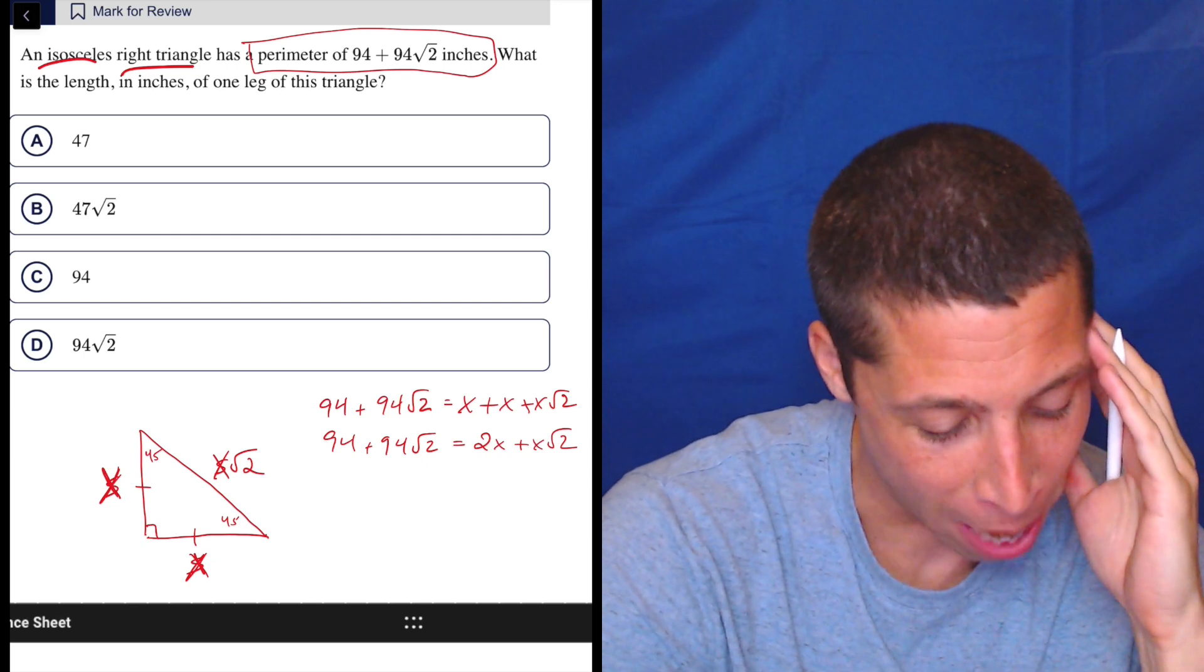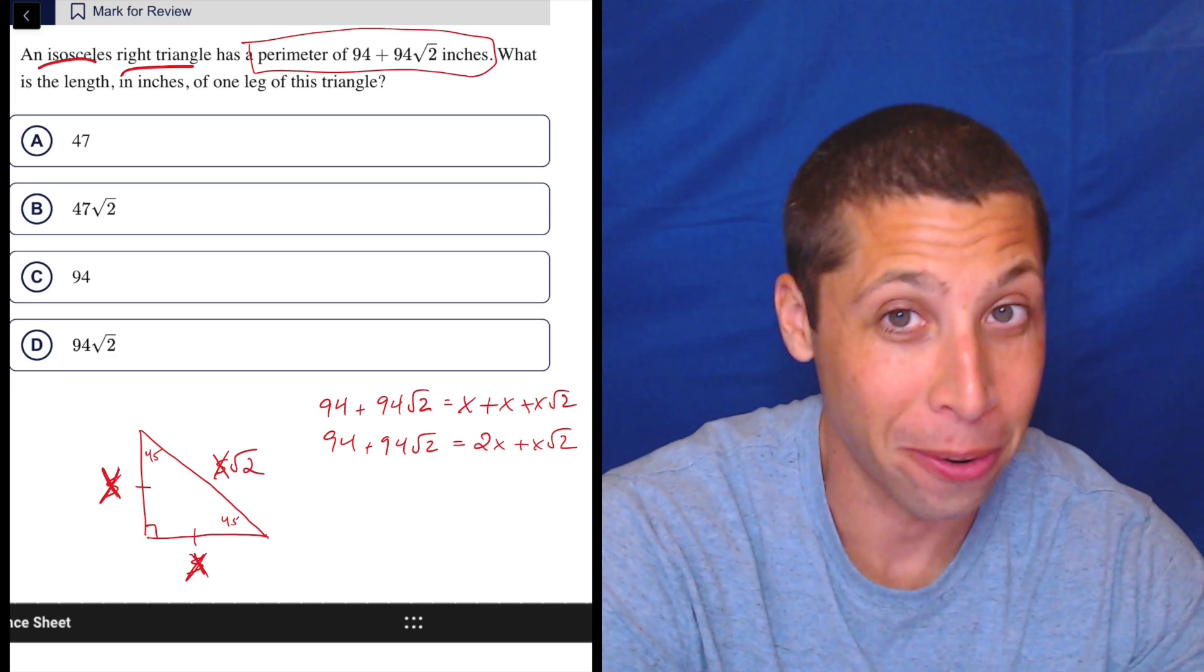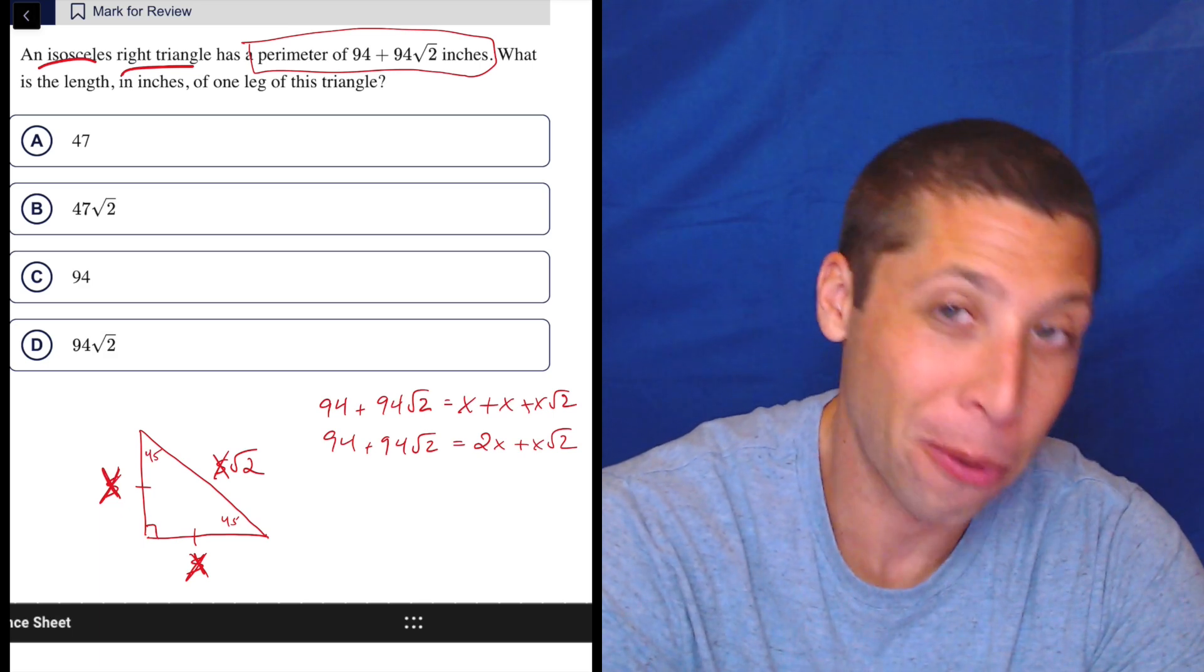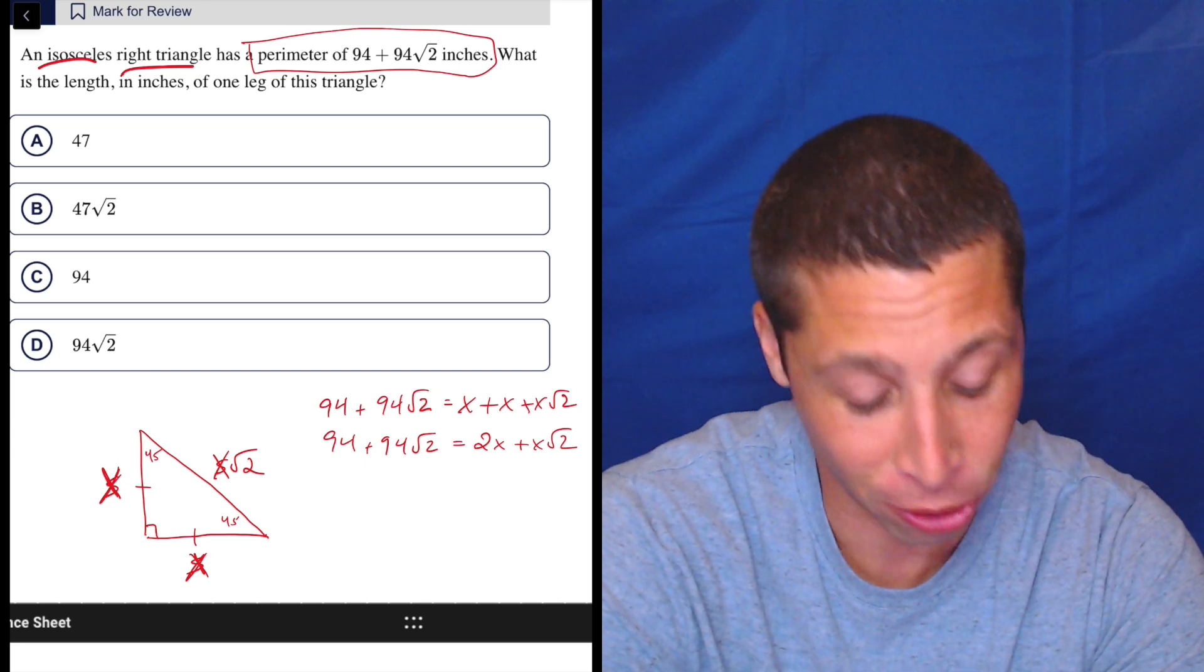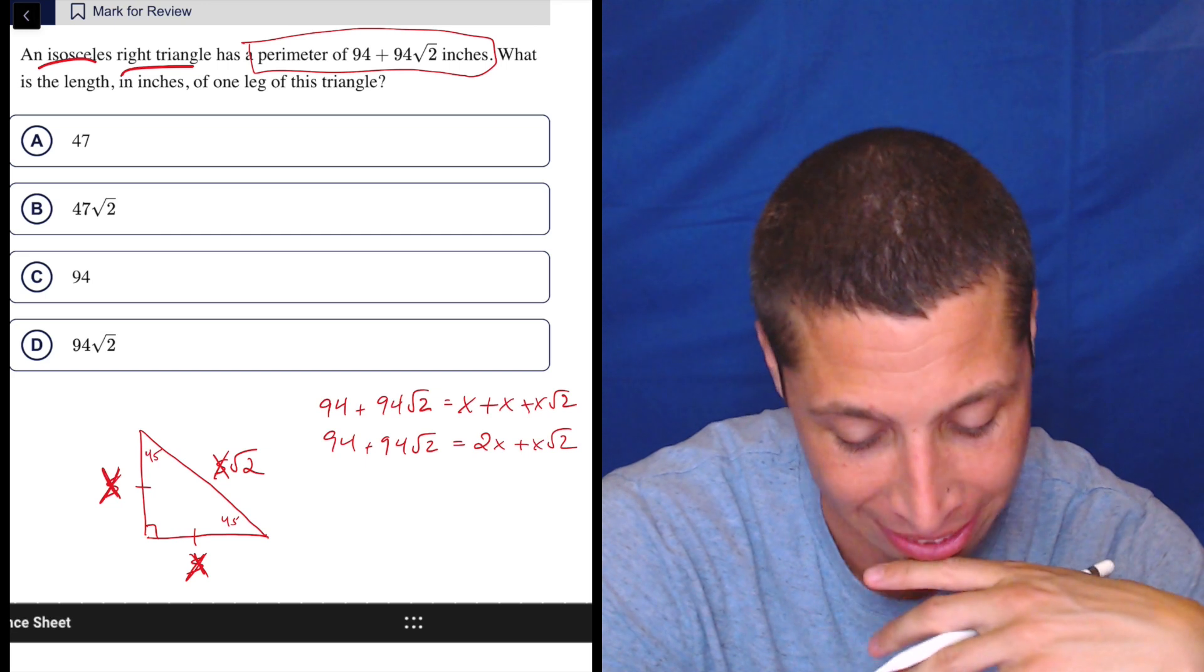right? Because we can see it now better, right? That 2X, if 2X is equal to 94, then X isn't going to be 94. So we got to solve it. And you can be like, oh, all right, that means that that 94 root 2 is somehow involved with the right triangle. And we've got to kind of work that back into the X. It's kind of going to be messy.